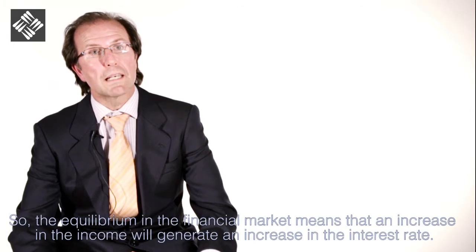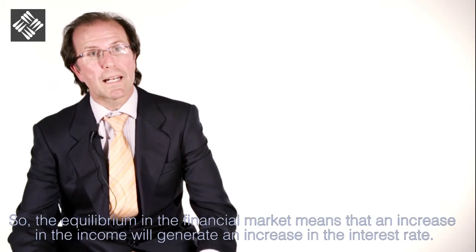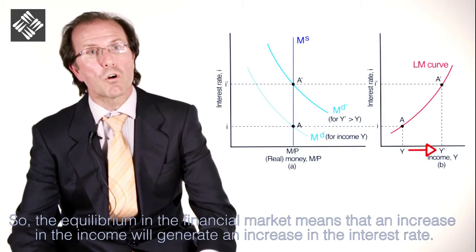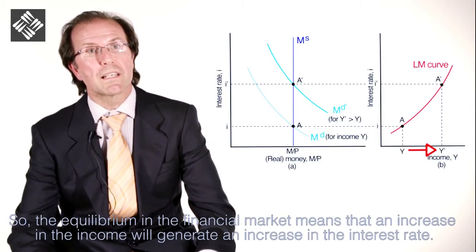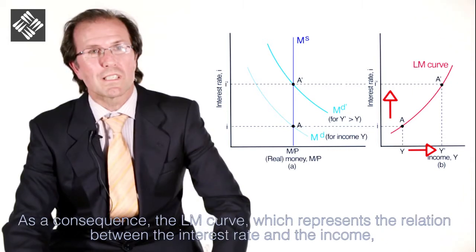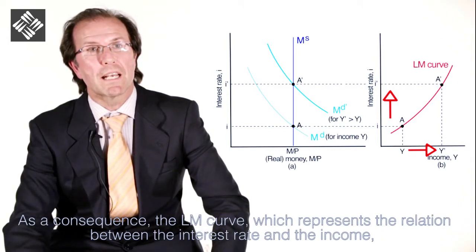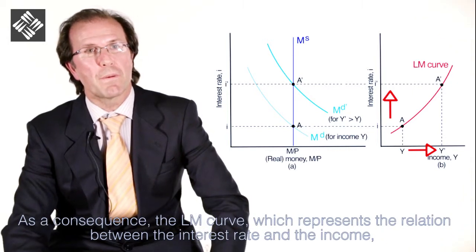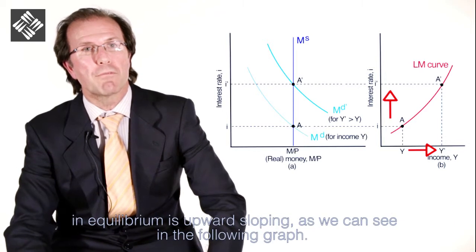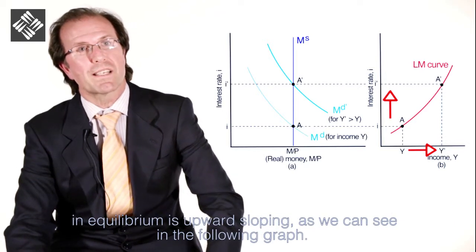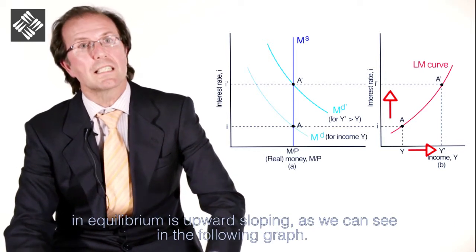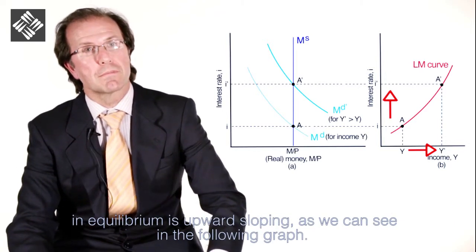So the equilibrium in the financial market means that increasing income will generate an increase in the interest rate. As a consequence, the LM curve, which represents the relation between the interest rate and income in equilibrium, is upward sloping, as we can see in the following graph.